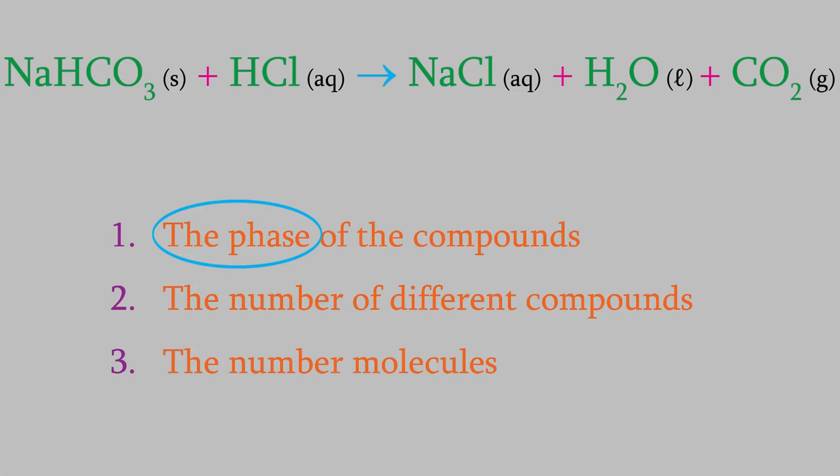The first one is the phase. In this reaction, we start with a solid and an aqueous compound, and we end up with a gas, a liquid, and another aqueous compound. So overall, we've exchanged a solid compound for a gas and a liquid. Both of those have a higher entropy than the solid, so the entropy in this reaction goes up.